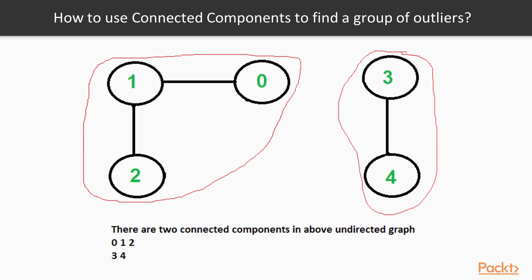For example, in a social network we can find a person whose only connected component is themselves — they have no friends at all. This is not a normal situation: if you join a social network you expect to have friends, and if you don't, it could indicate an anomaly or a potential hacker attack. We can then investigate further to determine if it is a genuine issue or not.